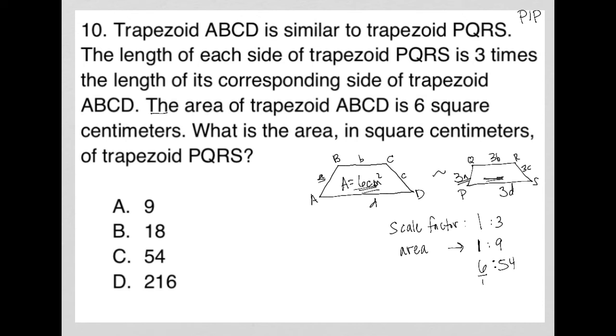Why? Again, because if I were to reduce this ratio, I'd get right back to my one to nine, which is what I know I need for the area. So the area of trapezoid PQRS must be 54 square centimeters, and therefore answer C must be the correct answer.